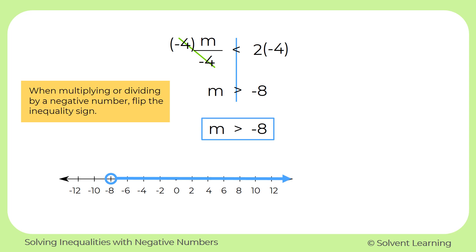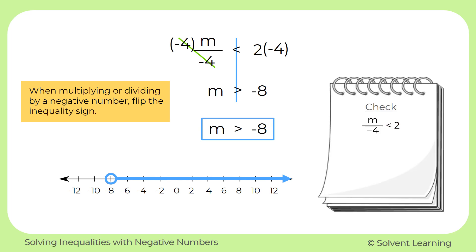Now let's check our answer. Start with our original problem. And let's see, what number do we want to plug in for m? It can be anything that's greater than negative 8. I'm going to choose the number 0. So now I have 0 over negative 4 is less than 12. Well, 0 divided by negative 4 is just 0. So that becomes 0 is less than 12, which is true. So I know that I have the correct symbol.